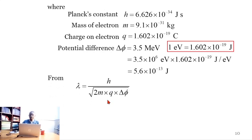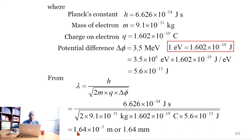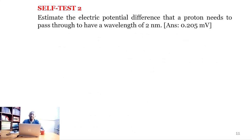Substituting all values into the expression — Planck's constant, 2, mass of the electron, charge on the electron, and the potential difference in joules — this evaluates to 1.64 × 10⁻³ meters, which we can write as 1.64 millimeters. The self-test question asks: estimate the electric potential difference that a proton needs to pass through to have a wavelength of 2 nanometers. The answer is 0.205 millivolts.